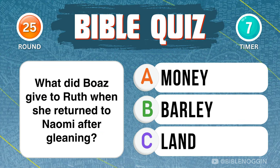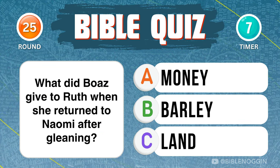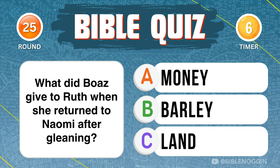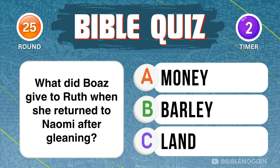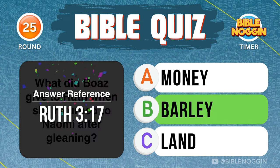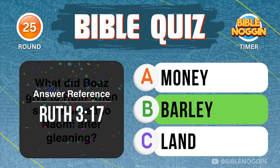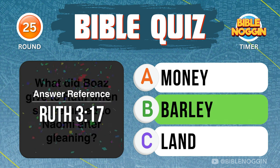Question 25: What did Boaz give to Ruth when she returned to Naomi after gleaning? Barley — found in Ruth chapter 3, verses 15 and 17.